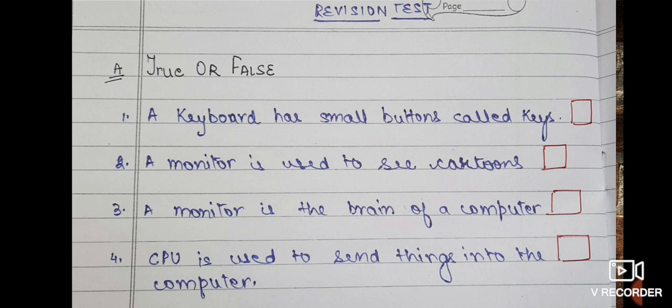So let's check one by one. Part A, true or false. First one is a keyboard has small buttons called keys, so you have to write true or false. A monitor is used to see cartoons. A monitor is the brain of a computer. A CPU used to send things into the computer.